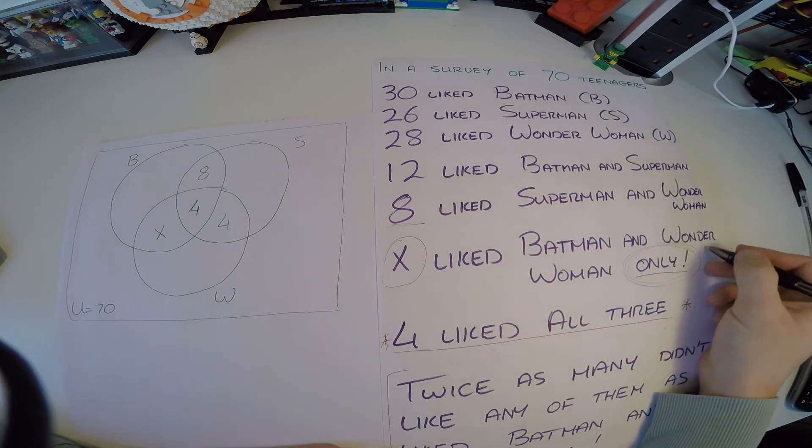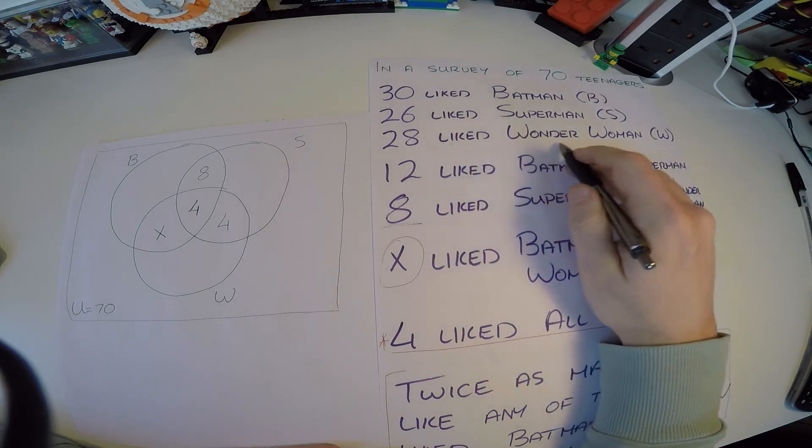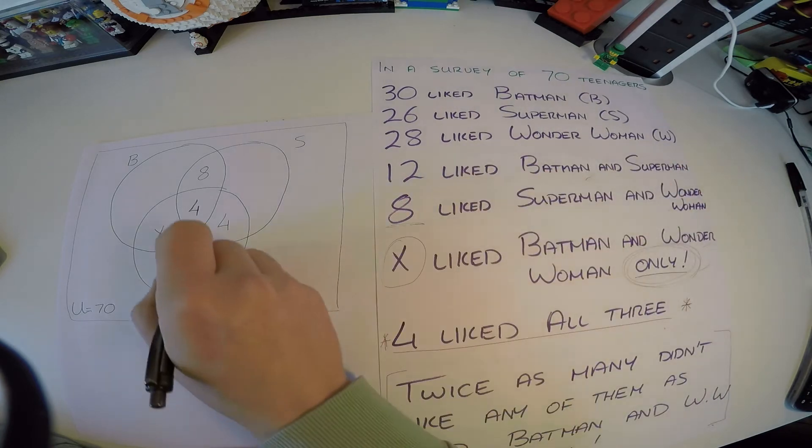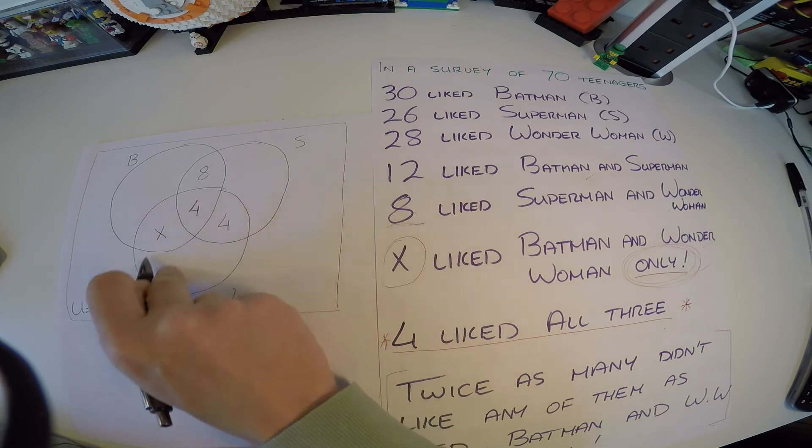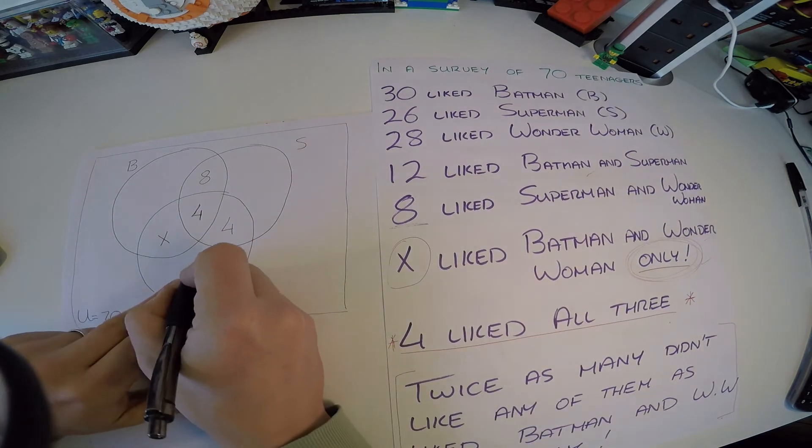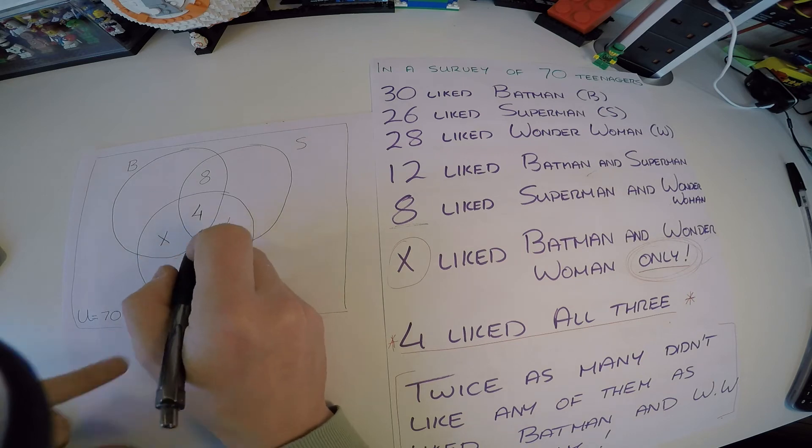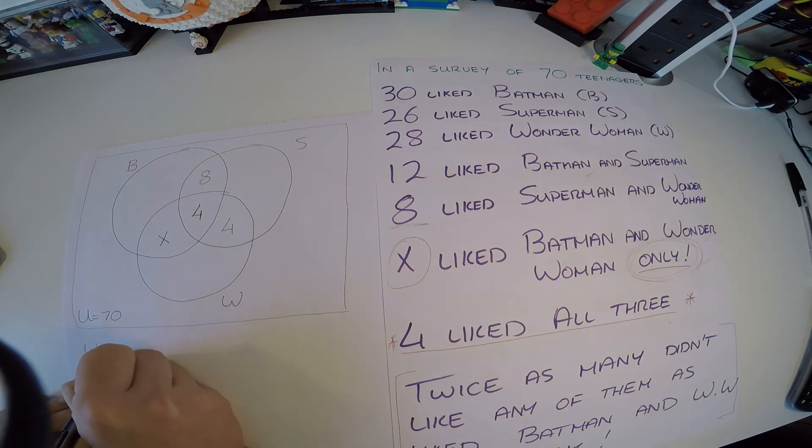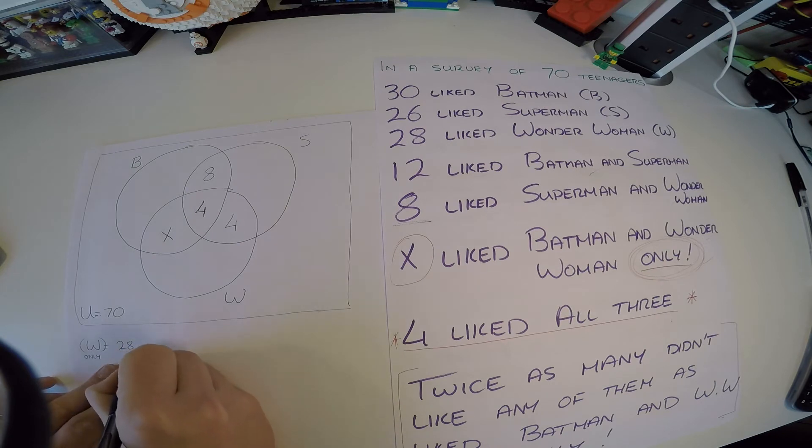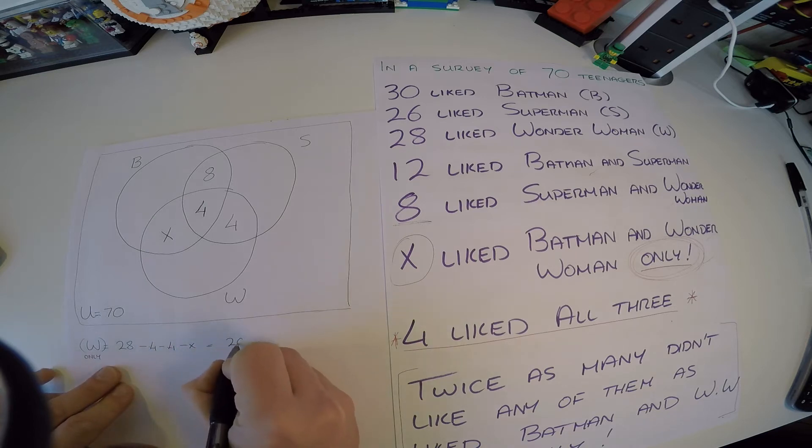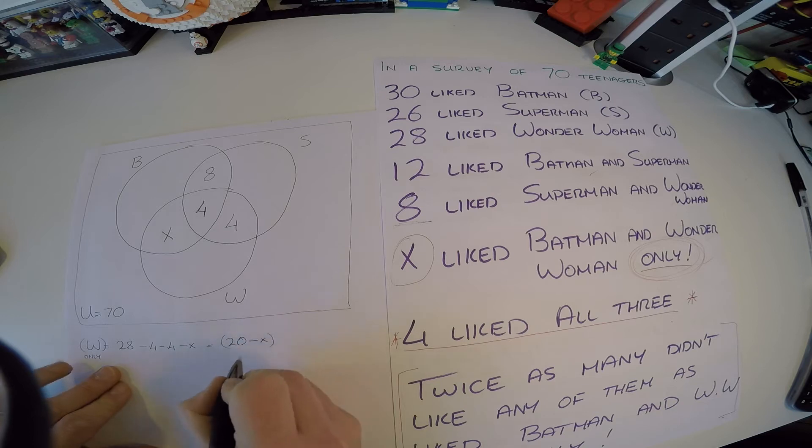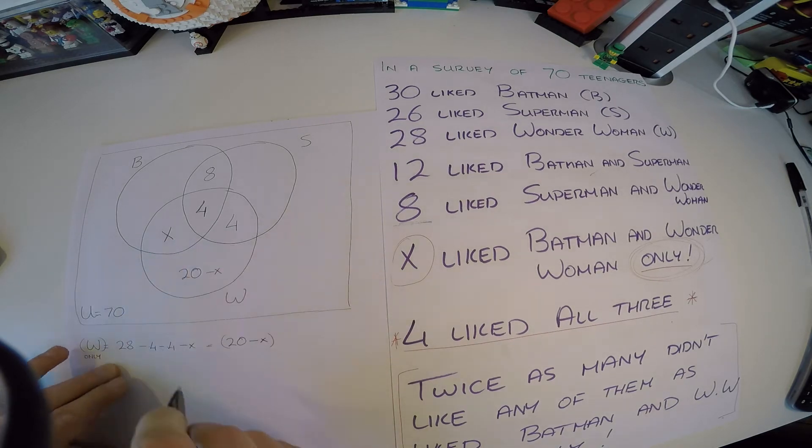So now 28 people in total liked Wonder Woman, so this whole section makes up 28. So if you like, it's 28 minus all these three things. So for Wonder Woman, we actually have 28, or Wonder Woman only, right, we actually have 28 minus 4 minus another 4 minus an x. 28 minus 4 minus 4 is 20, then minus x, well that just simply is actually 20 minus x. And I can't do any more with that, so in here is 20 minus x. That means if I add all these numbers together, I don't know what x is, I get 28.